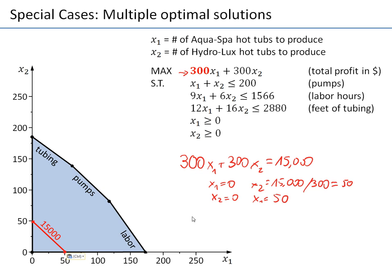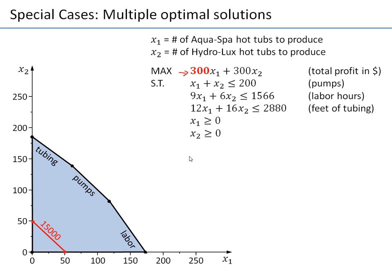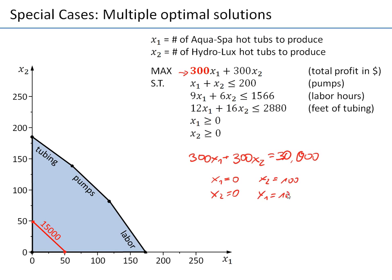Now we need another curve. Let's draw 300x₁ plus 300x₂ equals 30,000 — I'm going to double the value. If x₁ equals 0, you'll have x₂ equals 100. If x₂ equals 0, you'll have x₁ equals 100. So we're crossing (0, 100) and (100, 0), and we have a level curve that looks like this.